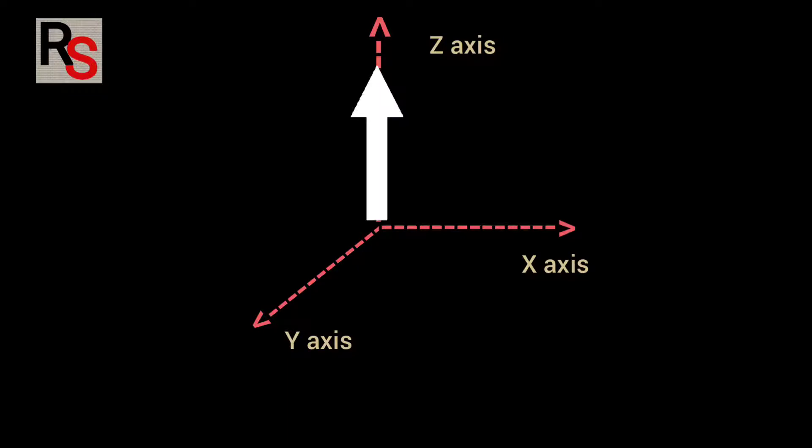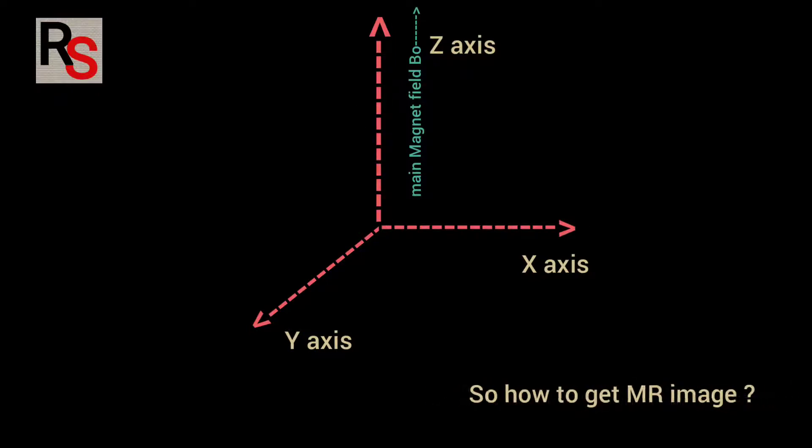However, we cannot measure the longitudinal magnetization as it is pointing in the direction of strong magnetic field B0. So how to get MR image?